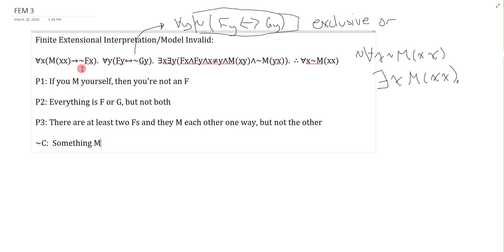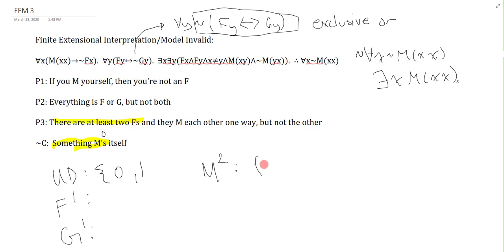UD, I'm going to start with 0, 1, and I leave it open just in case. I need F1, I need G1, and finally, now I need M2. So I always like to start at the existentials. The existentials, I just find, are the smartest places to start. So something M's itself. There are at least two Fs. These are two solid places to start. So something M's itself. What do you want that thing to be? I don't care. How about 0? So open the set bracket: {0,0}. I have now made the negation of the conclusion true.